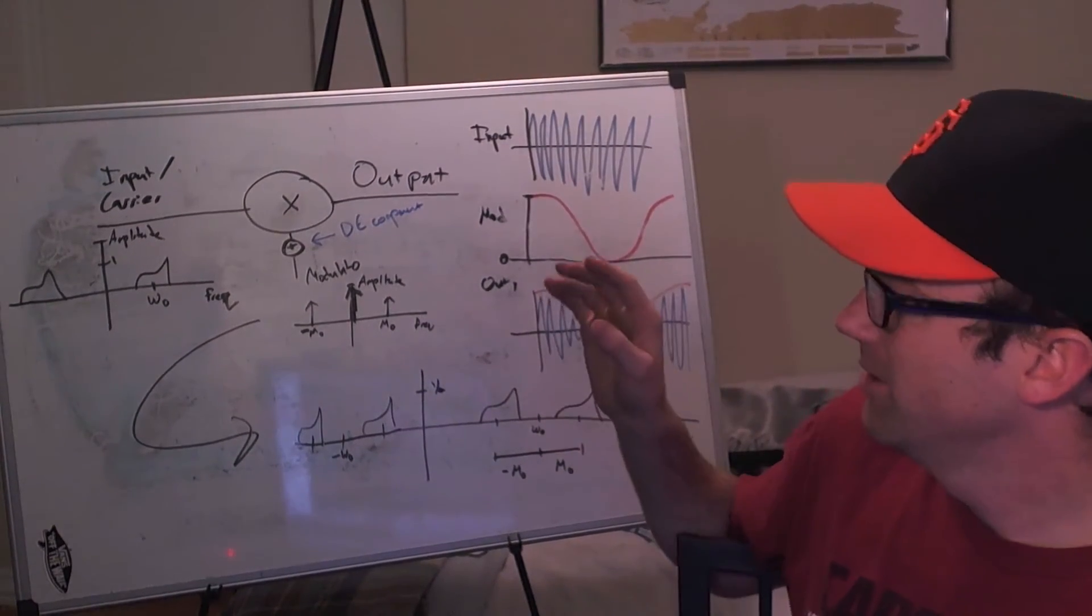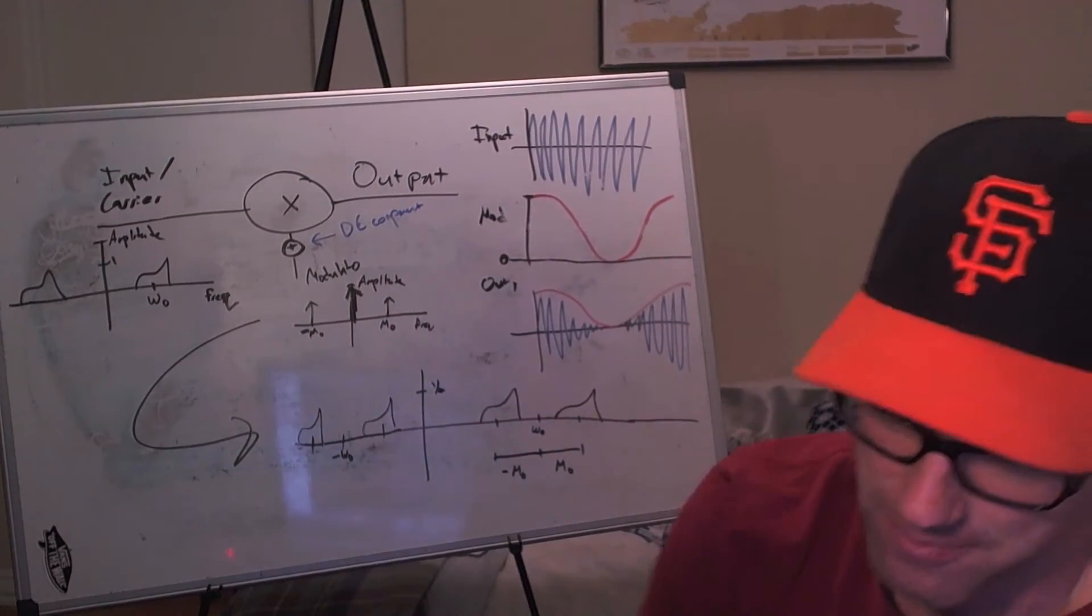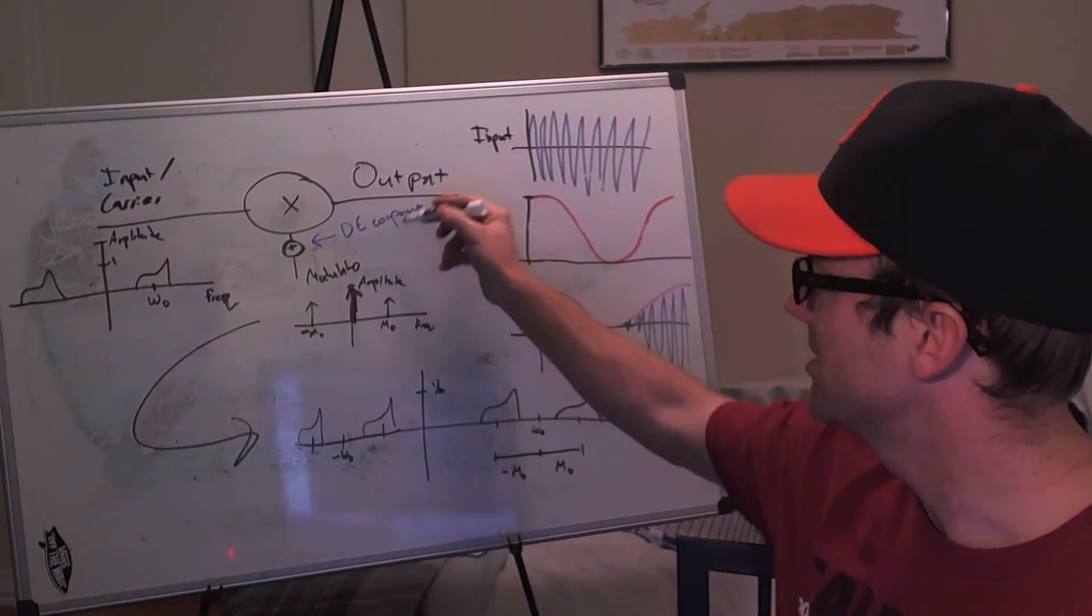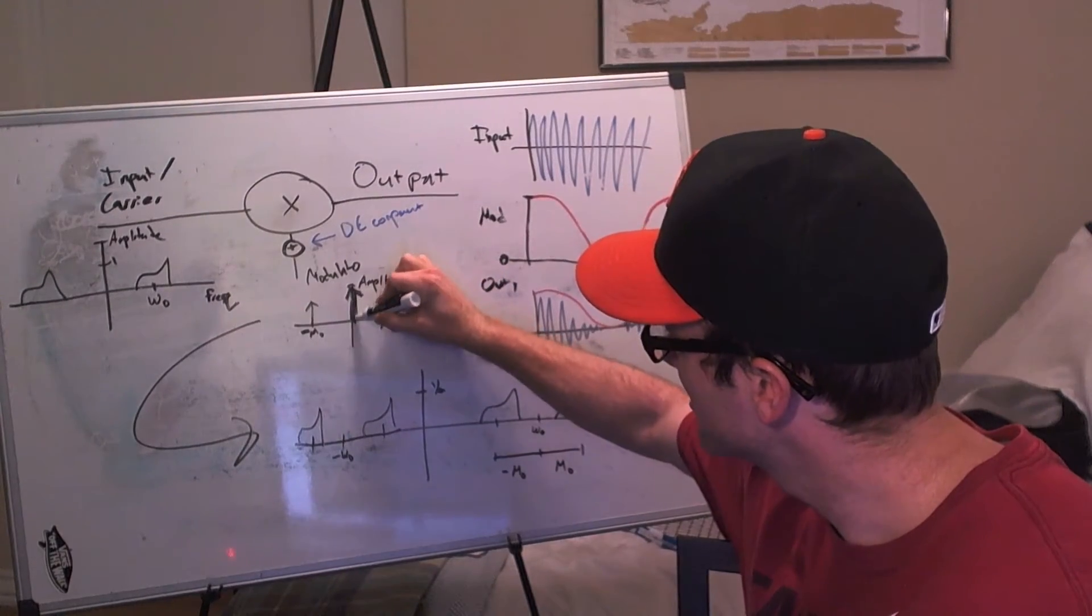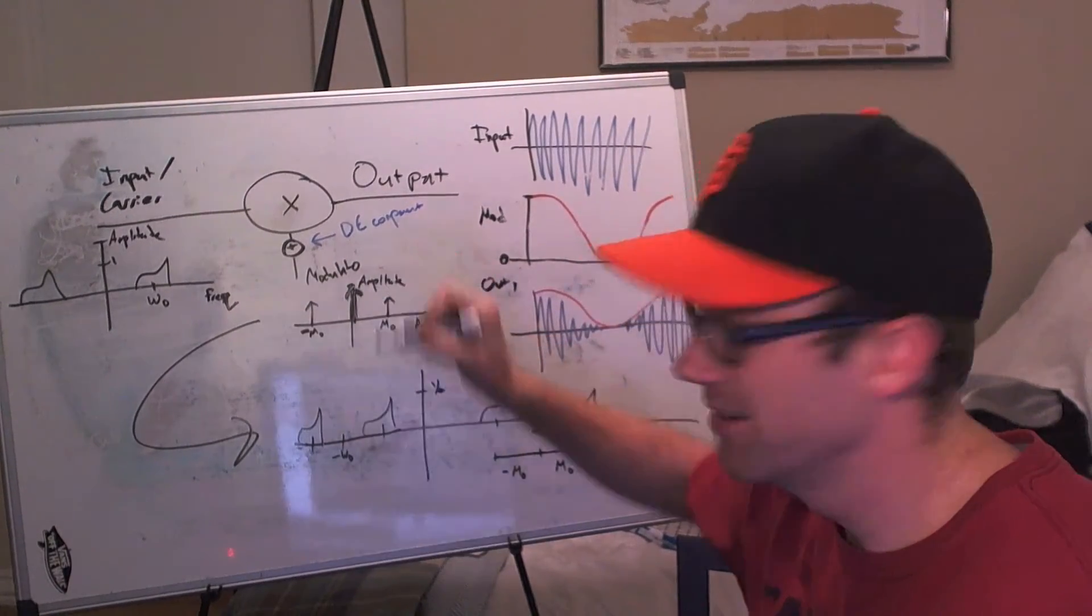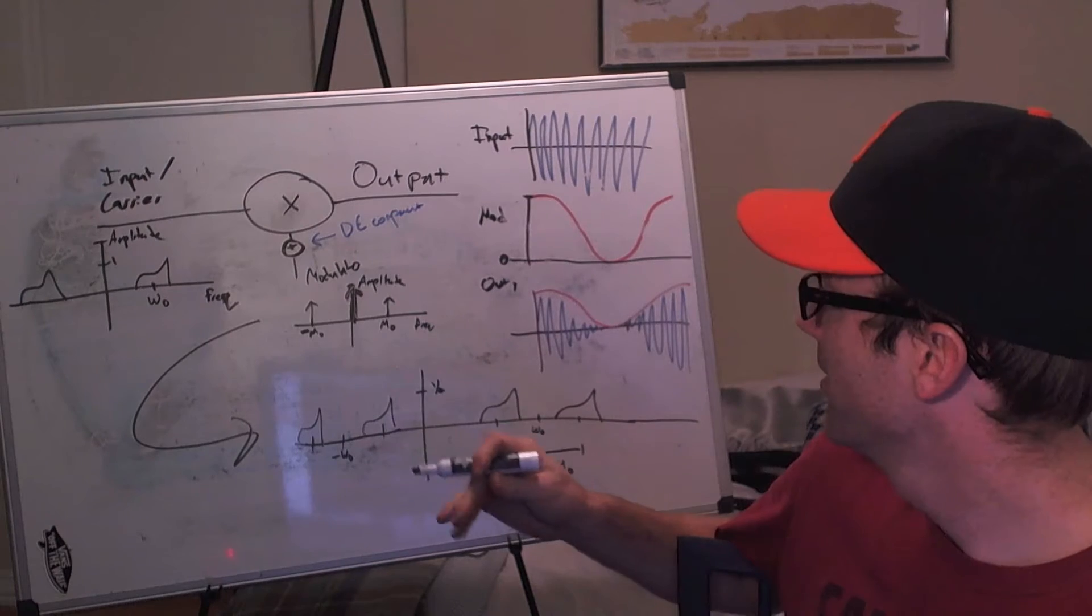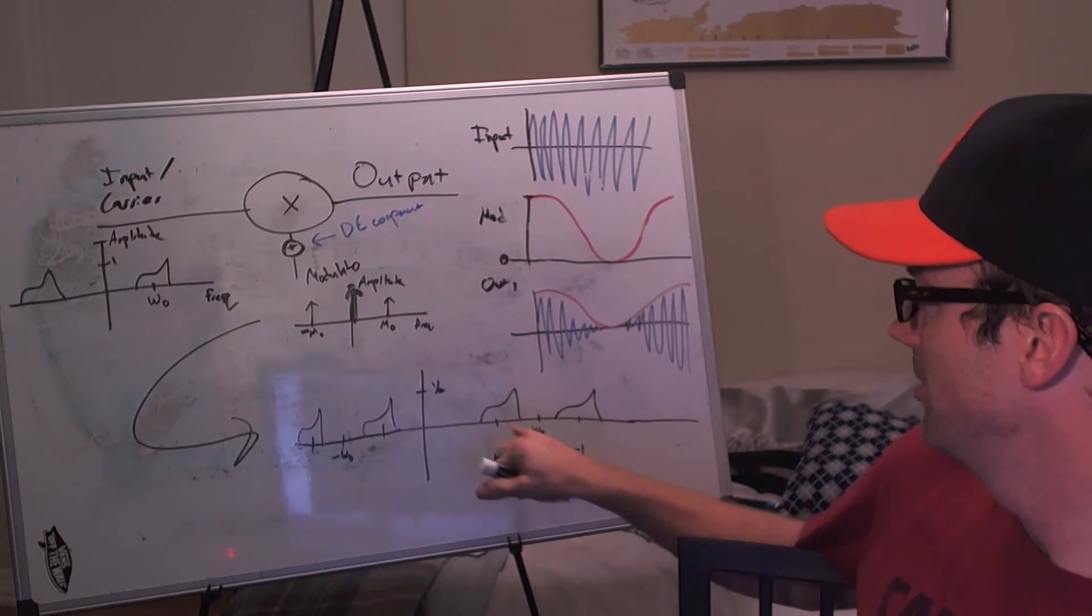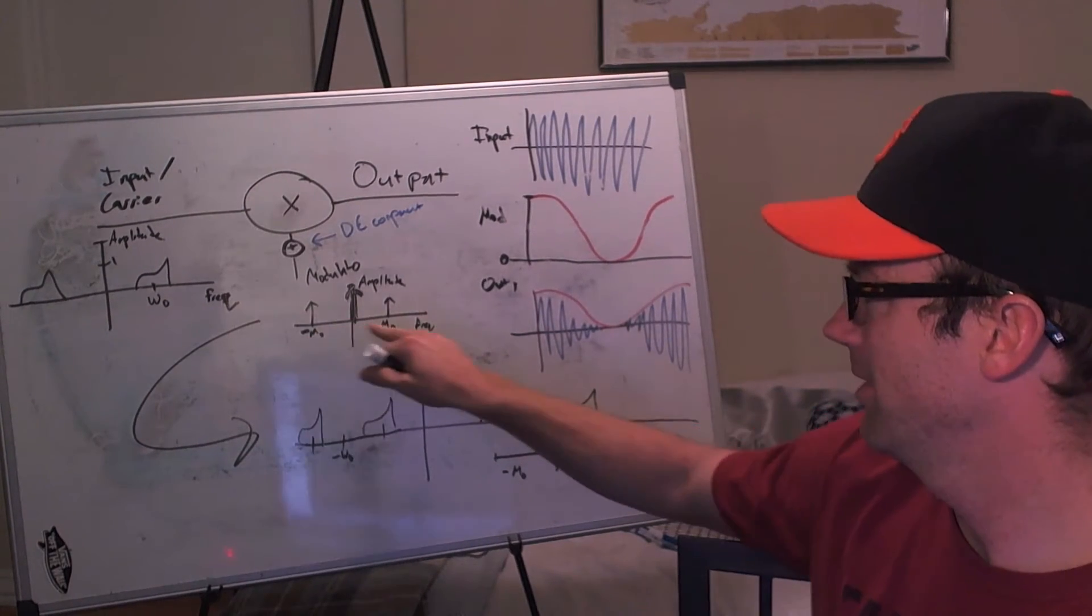So in the time domain, what is the effect? The real effect is that by adding this DC component, now we add this peak of energy here at 0 hertz. So when you do the convolution, you still get the sidebands from each of the sidebands of the cosine function.